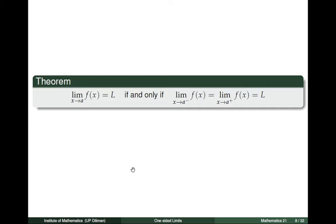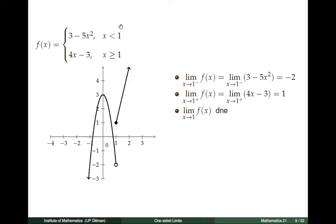As we have seen previously, the limit of f(x) equals L as x tends to a if and only if the two one-sided limits exist and are equal to the number L. Now let us go back to our function f(x), the piecewise function defined by 3 minus 5x squared if x is less than 1, and 4x minus 3 if x is greater than or equal to 1. Let us go back to the point x equals 1. If we want to consider the limit of f(x) as x tends to 1 from the left side, we need to consider x values that are very close to 1 but less than 1.